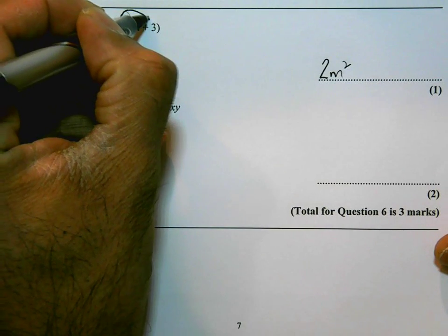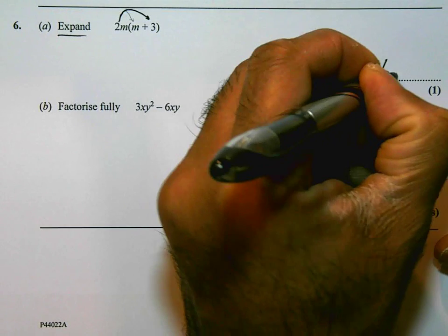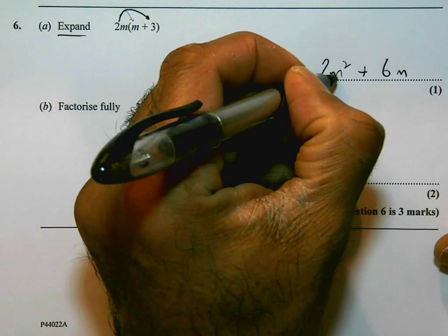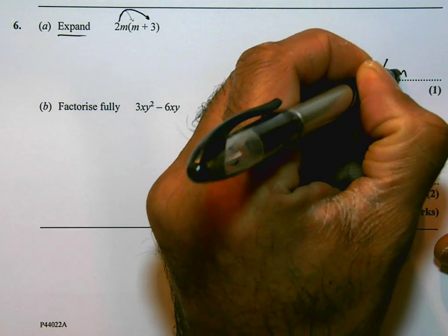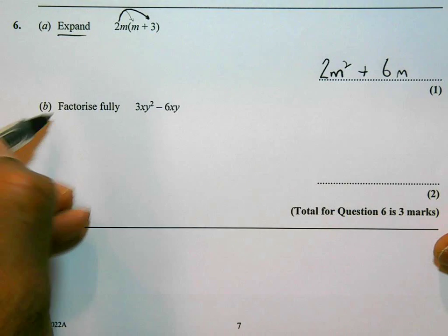2m times 3. 2 times 3 is 6, so that's going to be plus 6m. That's a pretty straightforward question. You should be able to do that pretty easily and pretty confidently. Make sure you can and make sure you are able to do it.